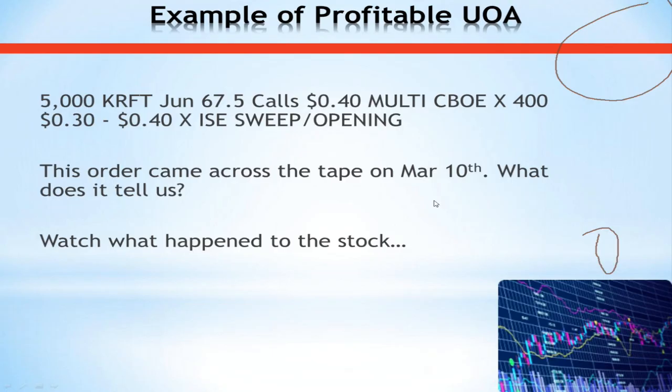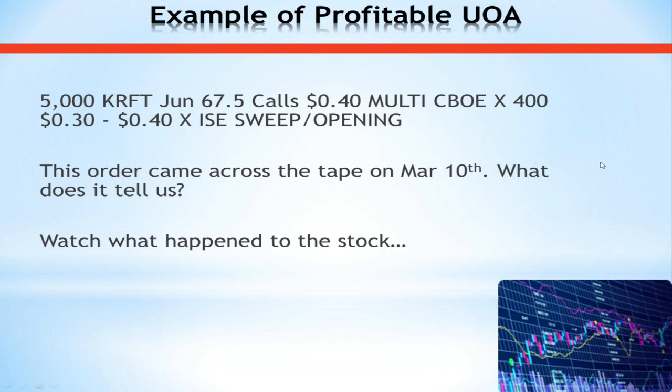Let's take a look at another example from this year, in Kraft — this is probably the most blatant example of insider trading that I have ever seen in my entire life. And you haven't heard anything yet from the SEC about whether anyone is going to get in trouble for doing this. What we have is an order that came across the tape on March 10th: 5,000 of the Kraft June 67.5 calls were bought for $0.40 as an opening position when the market was $0.30 bid at $0.40.